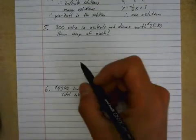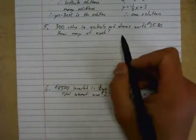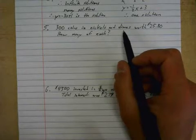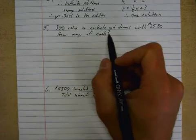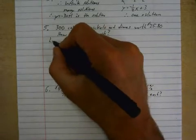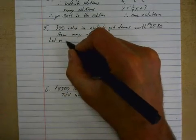Alright, number five. Let me condense this a little bit. 300 coins in nickels and dimes worth $25.80. How much of each? So first of all, you need to write let statements. Let n represent...